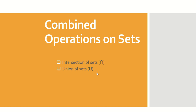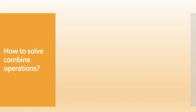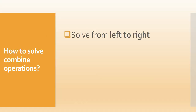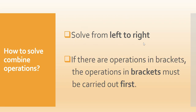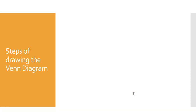But how do we solve it? To solve the combined operations, first you have to know that we solve from left to right. And if there is a bracket, the operations in the brackets must be carried out first. And then we have to know the steps of drawing the Venn diagram.